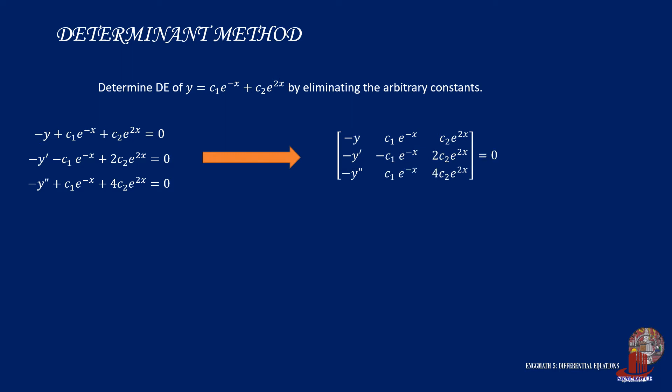Now, note that from each column, we can extract a common term. From the first column, we are able to extract negative 1. C1 times e raised to negative x is also present in all elements in column 2, so extract it out. The third column has C2 times e raised to 2x as a common term, so it is extracted as well.